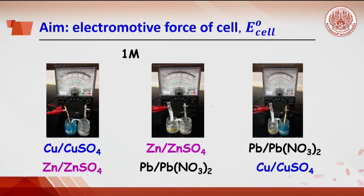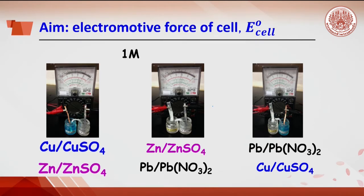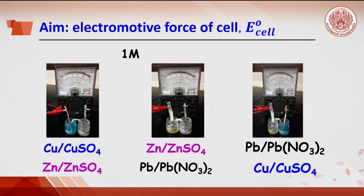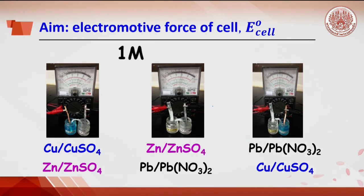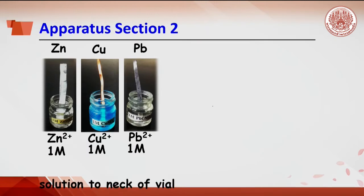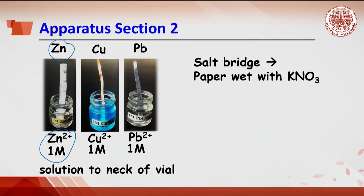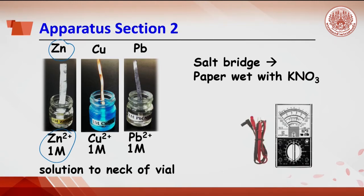Section 2 aims to measure the electromotive force of the cell from the half cells of copper/copper ion with zinc/zinc ion, zinc/zinc ion with lead/lead ion, and lead/lead ion with copper/copper ion. All solutions are 1 molar, so the measured electromotive force is a standard EMF. Three half cells are prepared by putting the metal strip into its solution. A salt bridge is made using filter paper wetted with potassium nitrate solution, and a multimeter is prepared.